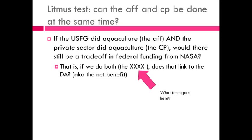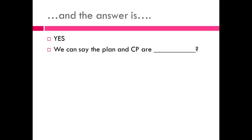Let's do our litmus test again. Can the affirmative and the counter plan be done at the same time? If the USFG did aquaculture and the private sector did aquaculture simultaneously, would there still be a trade-off in federal funding from NASA? The answer is yes. So if we do both — the permutation — does that link to the DA, the net benefit? Yes. Therefore we can say the plan and the counter plan are mutually exclusive.